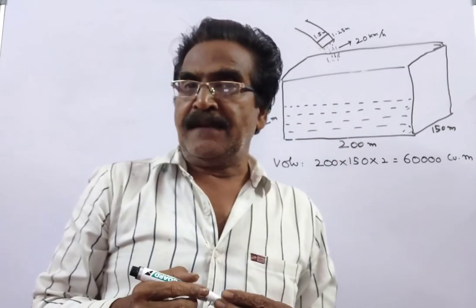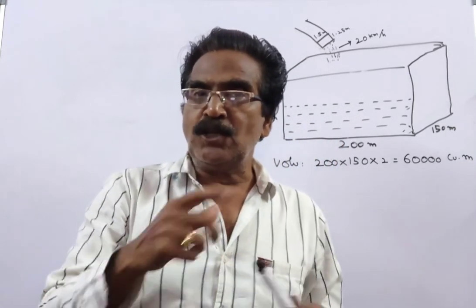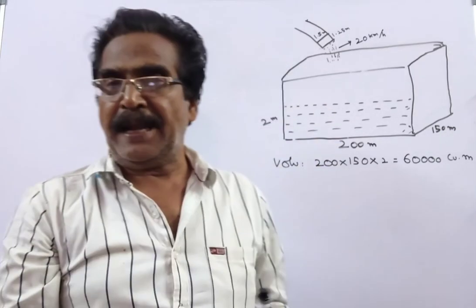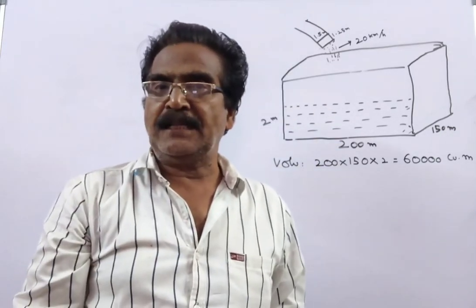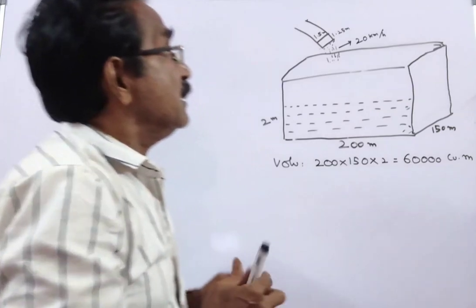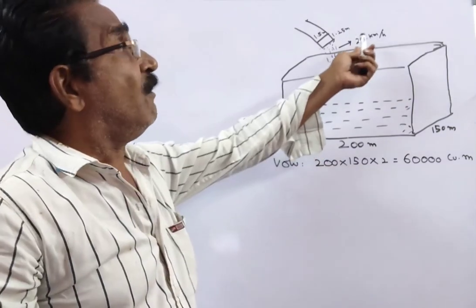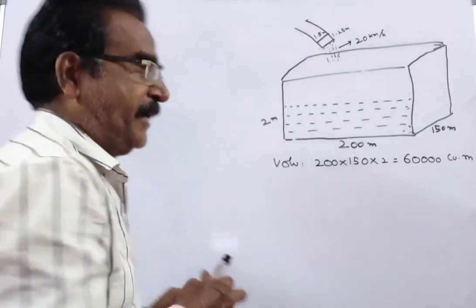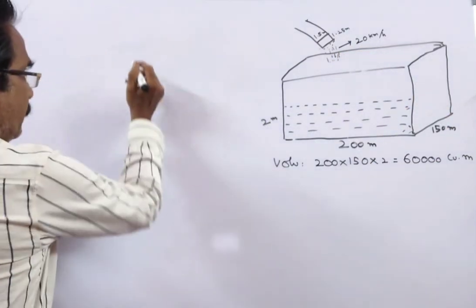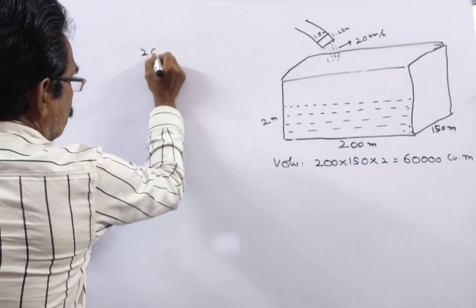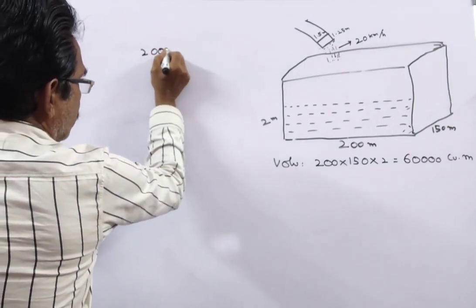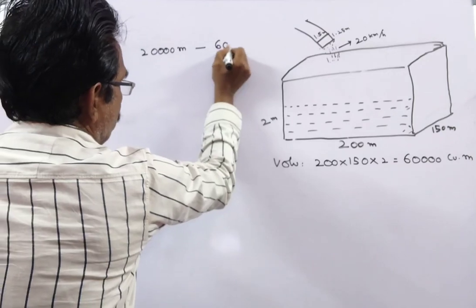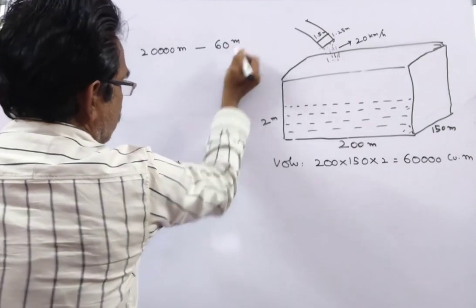Now, what is the volume of the water released by the pipe in 1 minute? See friends, the water is coming at a speed of 20 kmph. That means 20,000 meters in 60 minutes.